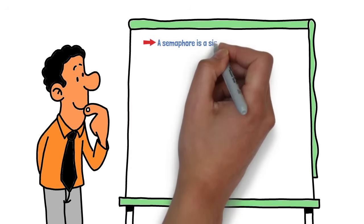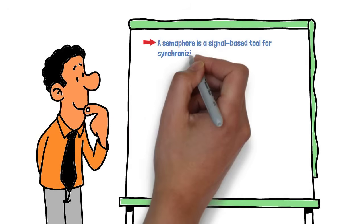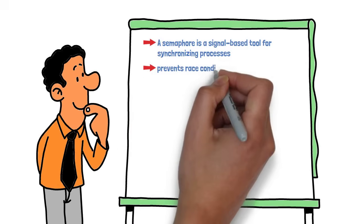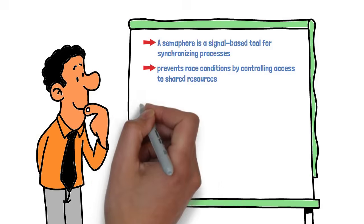A semaphore is a signal-based tool for synchronization processes. It prevents race conditions by controlling access to shared resources.